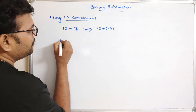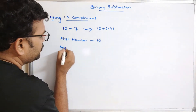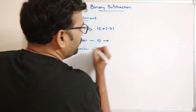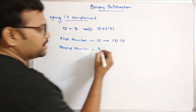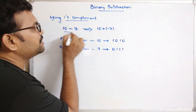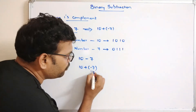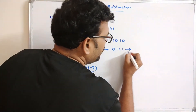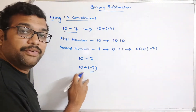Here the first number is 10 and the second number is 7. The binary equivalent of 10 is 1010. The binary equivalent of 7 is 0111. But if we want to perform 10 minus 7, we do 10 plus minus 7. To find minus 7, we use 1's complement — just flipping the bits gives the 1's complement. So 0111 becomes 1000, and this is minus 7.